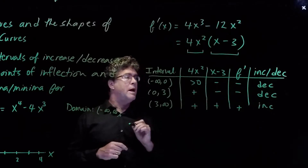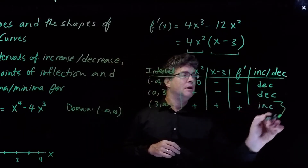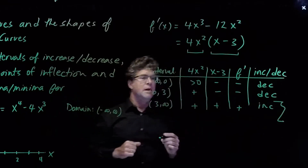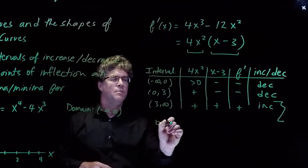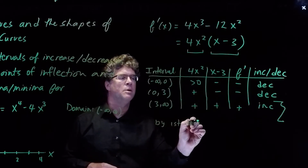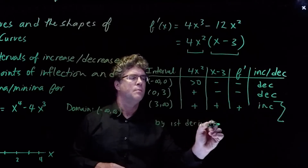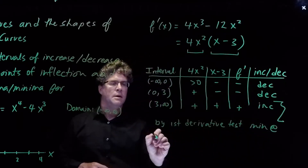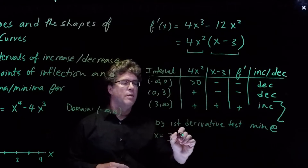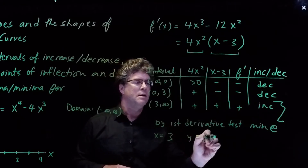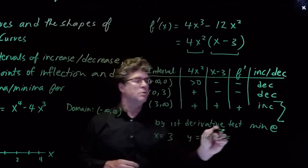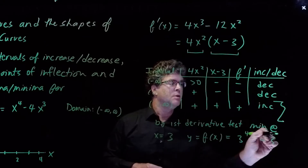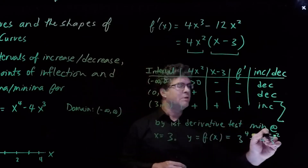At x equals 3, we go from decreasing to increasing. So by the first derivative test, there is a minimum at x equals 3. The y-value is f(3) equals 3 to the fourth minus 4 times 3 cubed, which turns out to be minus 27.